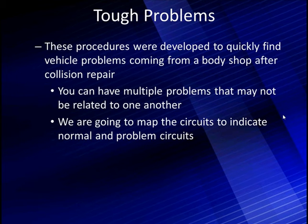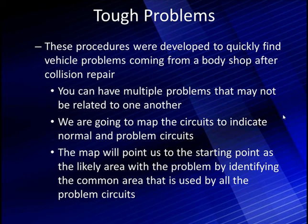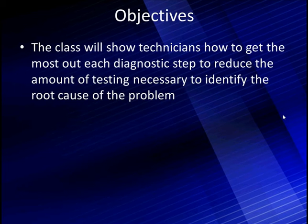We're going to map out these circuits to indicate which circuits are normal and where the problem circuits are — and we do this before we ever pick up a meter. We're going to use the diagram. The map we make will point us to the starting point as the likely area with the problem, by identifying the common areas used by all the problem circuits. That's going to help us focus our testing. We're not going to start testing until we have a direction pointing us somewhere. This class will show you how to get the most out of each diagnostic step to reduce the amount of testing necessary to identify the root cause of a problem.